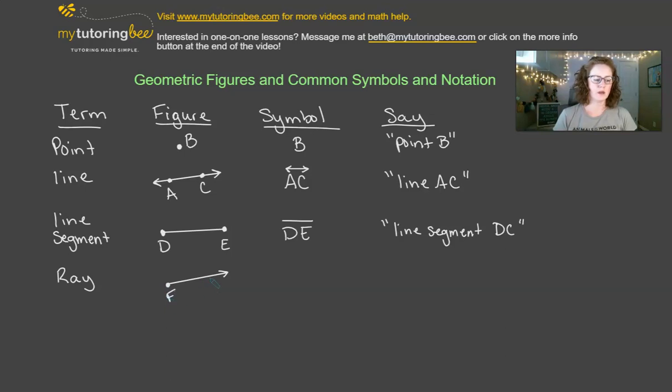So again, if we want to use this as a symbol, we would need to pick two points along that ray, and when we are writing this symbol for the ray, we always want this to be the first point that we use in our notation here. So we know that it starts at F and then it rays out to point through point G.